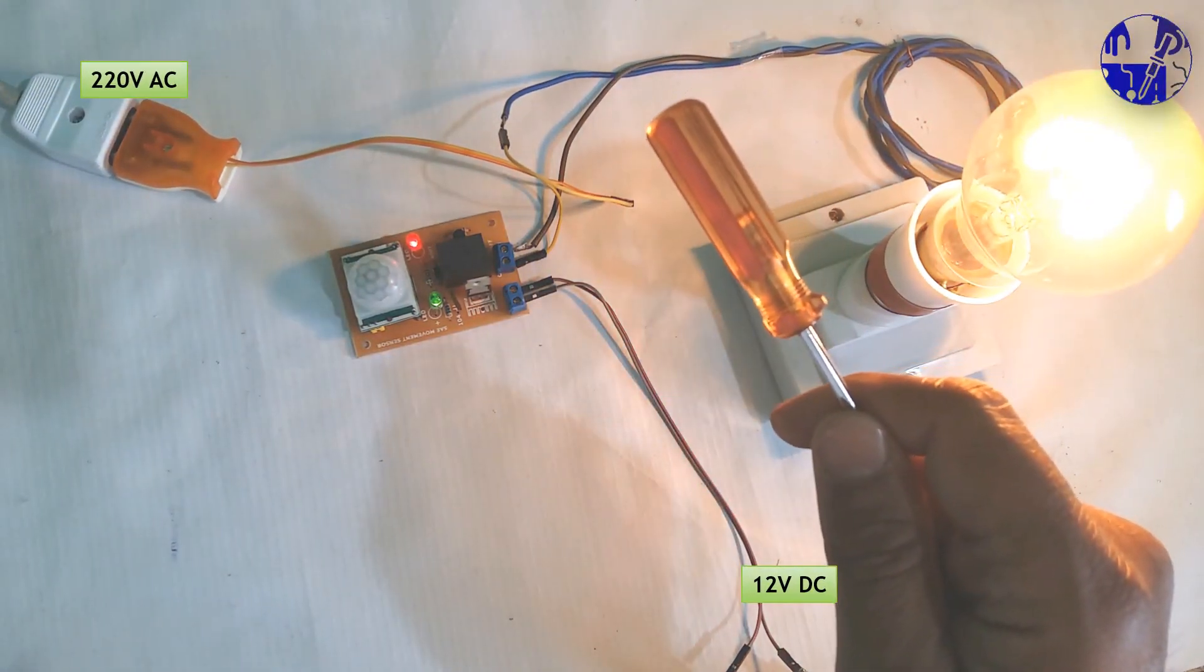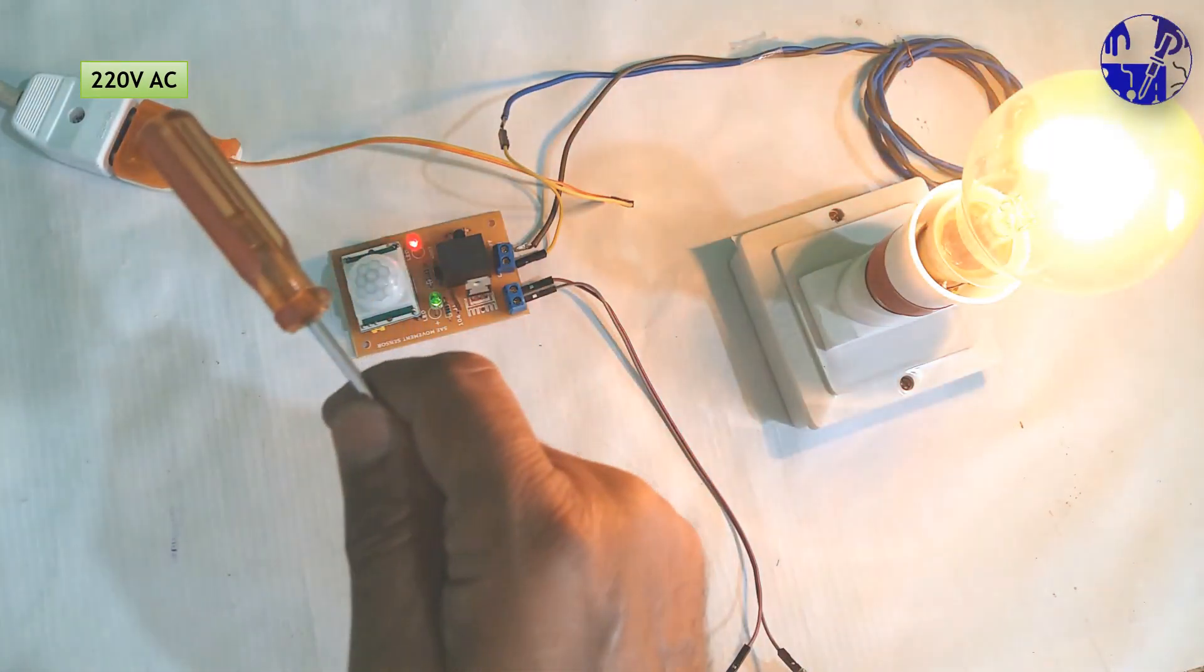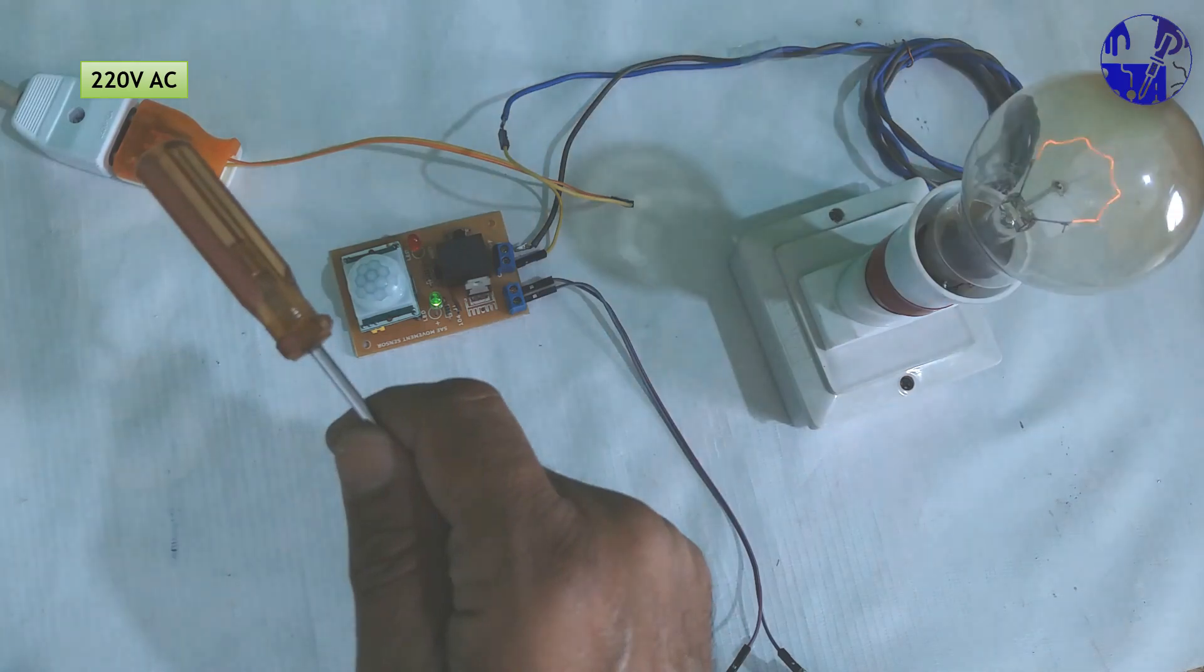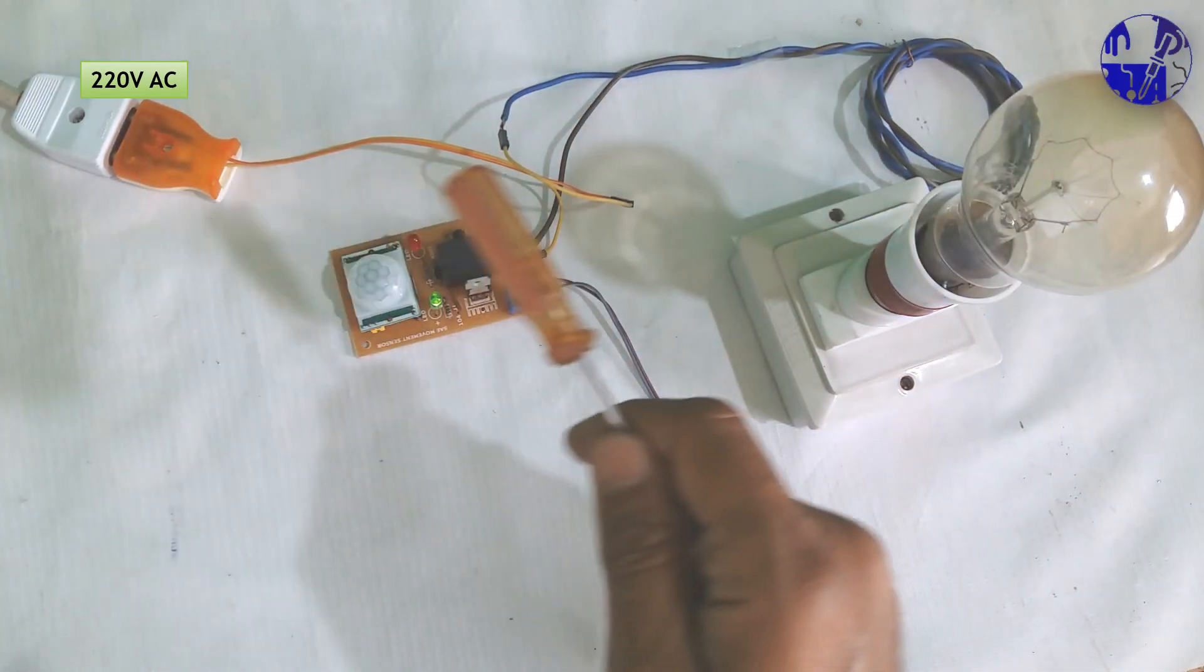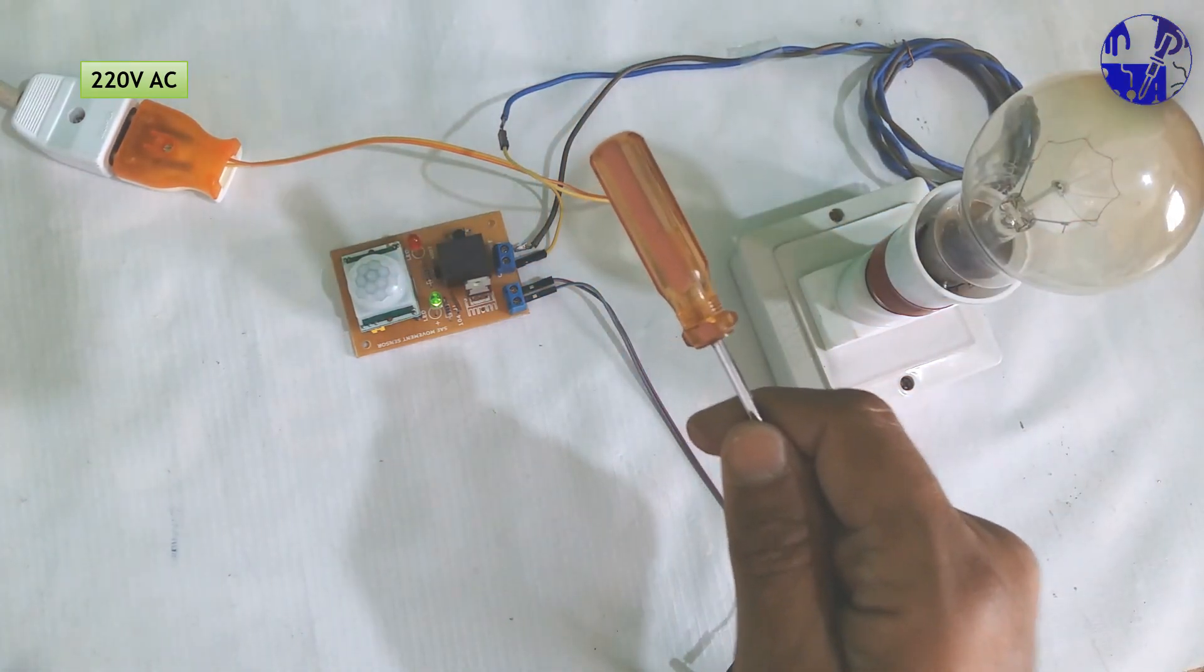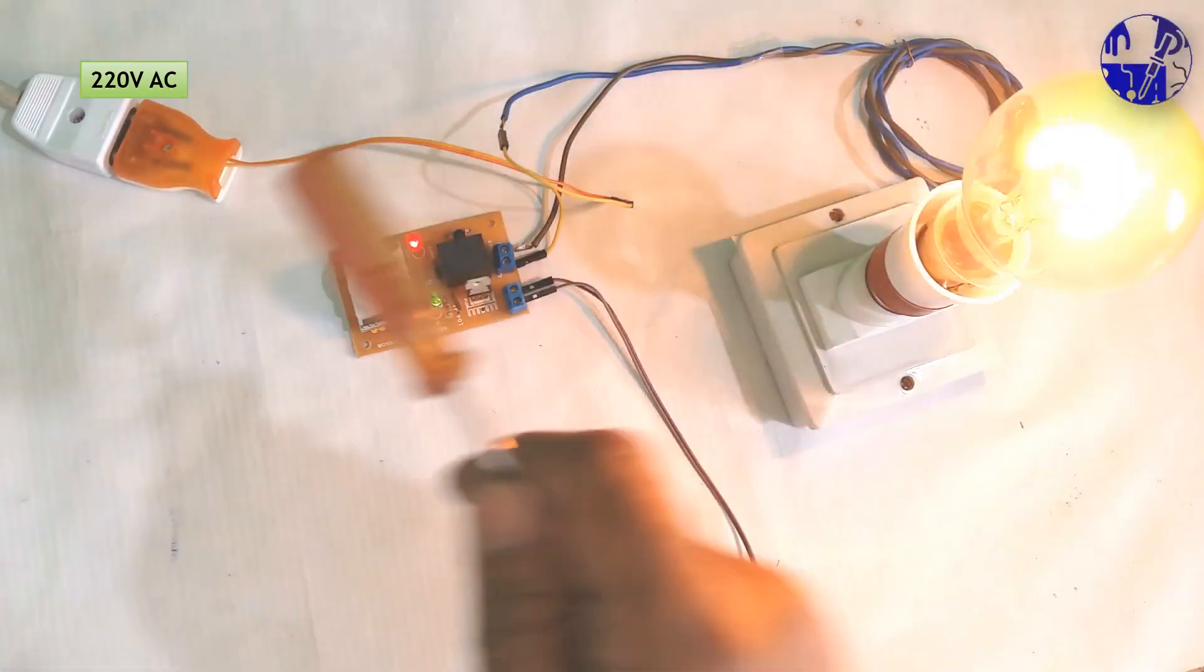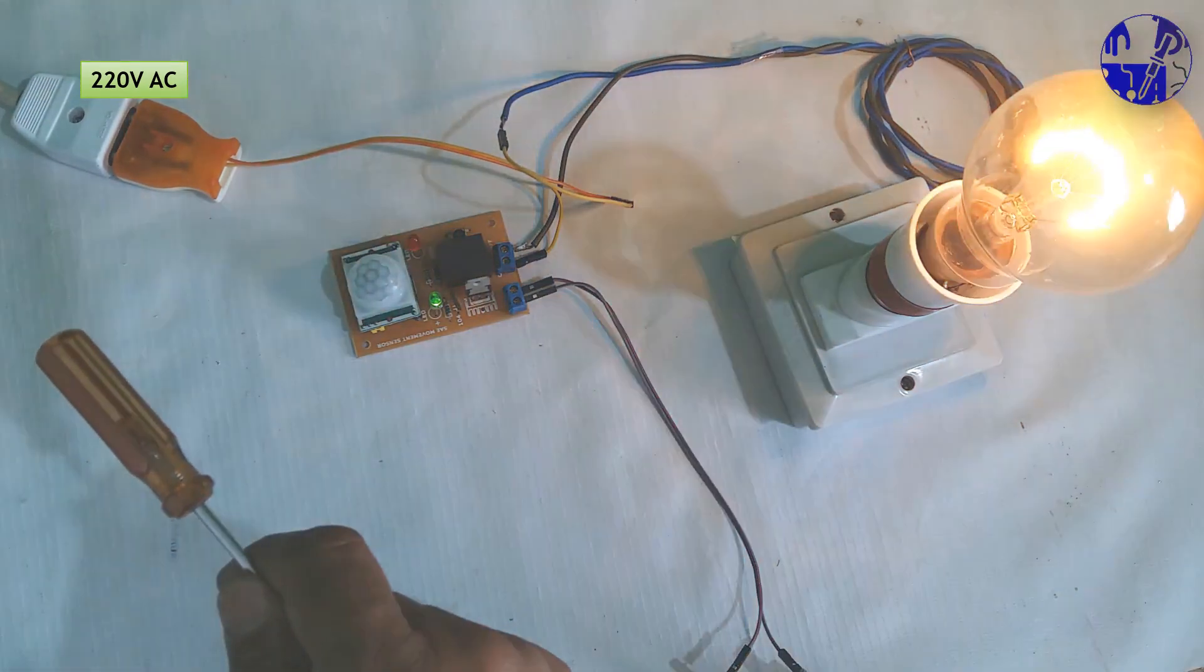The PIR motion sensor detects infrared radiation emitted by a moving human body. It generates a pulse to activate connected devices like relays, bulbs, or alarms. In our setup, we link a 12-volt relay to the PIR sensor, triggering it with the sensor's signal as it detects human movement, creating a responsive PIR motion sensor light switch.